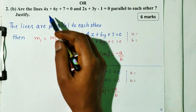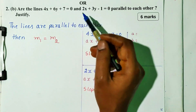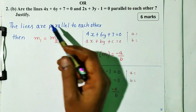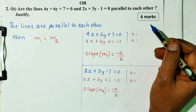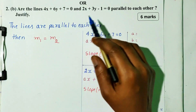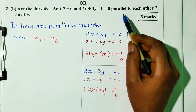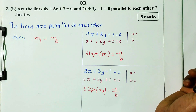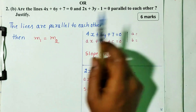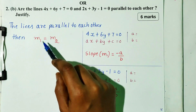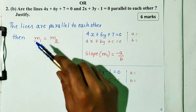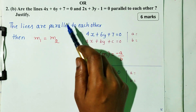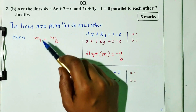Question number 2b: are the lines 4x plus 6y plus 7 equal to 0 and 2x plus 3y minus 1 equal to 0 parallel to each other? We will justify. If the lines are parallel to each other, the slope condition is m1 equal to m2. We will prove this.